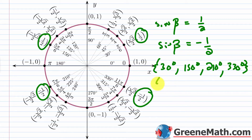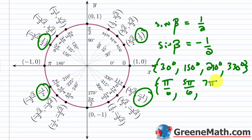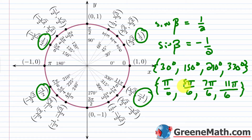In terms of radians, those solutions are pi over 6, 5 pi over 6, 7 pi over 6, and 11 pi over 6. These are your solutions over the interval from 0 to 360 degrees, or from 0 to 2 pi in radians.